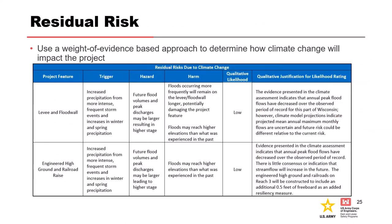The last part of a qualitative climate assessment is bringing it all together using a weight of evidence-based approach. You take a look at what the literature review is saying, your original data and trend analysis, your results from the non-stationarity detection analysis, and what the projections are saying. You try to build a case for how climate change is actually going to impact things in your region. For most projects, you try to figure out what project features are being built — like a levee, flood wall, or engineered high ground — and think about the triggers, hazards, harms, likelihood of occurrence, and what the impact would be.